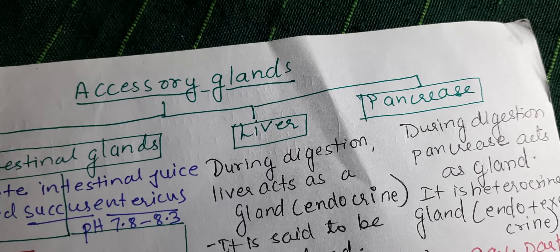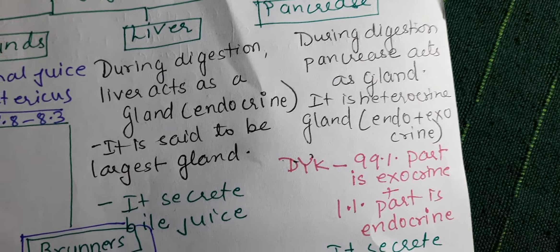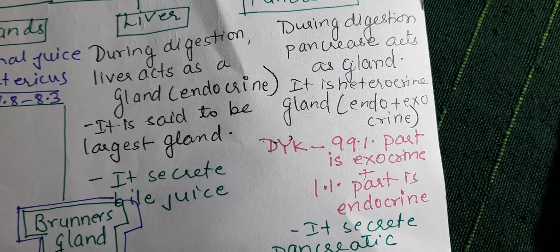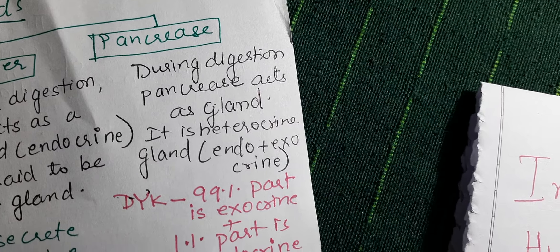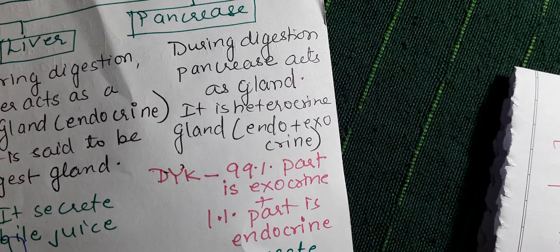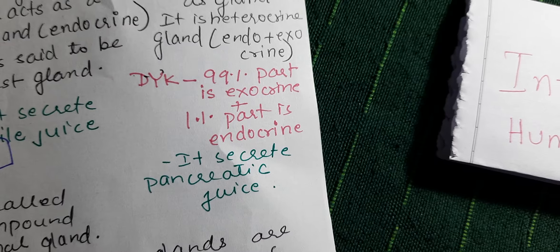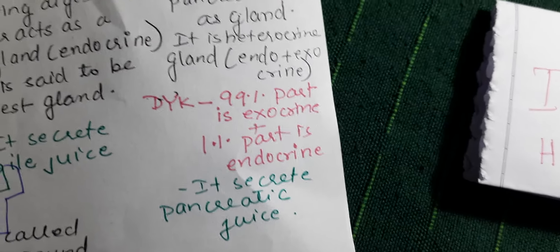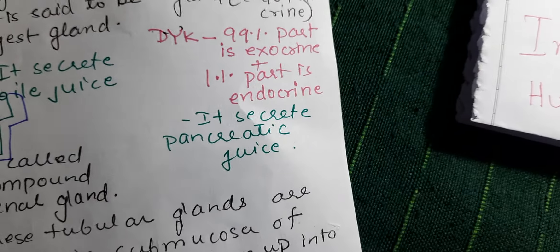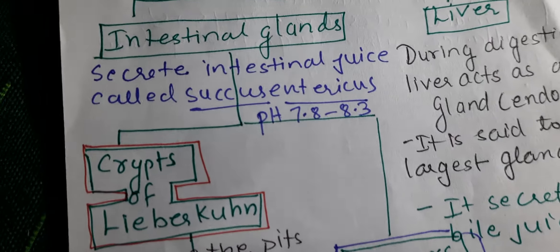The intestine also receives secretion from accessory glands: liver and pancreas. During digestion, the liver acts as an exocrine gland and is the largest gland, secreting bile juice. The pancreas acts as a heterocrine gland — both endocrine and exocrine — with 99% being exocrine and 1% endocrine. The endocrine part secretes hormones whereas the exocrine part secretes enzymes in the form of pancreatic juice. The cells of the intestine that act as glands are called intestinal glands.